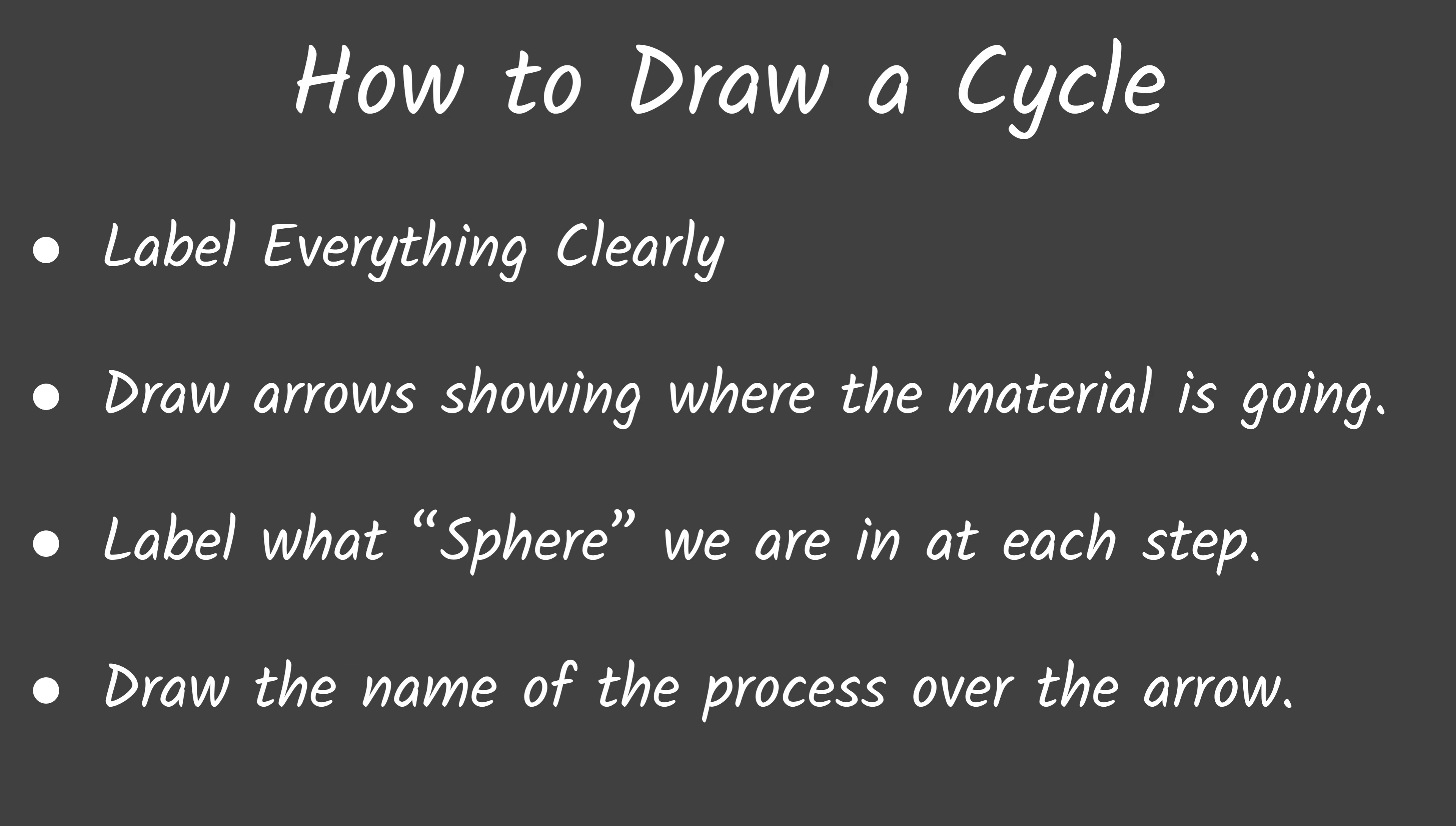When it comes to actually drawing a cycle, there's important steps that we need to do. First, you need to make sure everything is labeled clearly. That means it's clear where the label belongs, and it's written legibly so I can read it. You need to have arrows showing the direction that the material or energy is going. So if I'm drawing the carbon cycle and an animal is consuming a carbon source, I need to show that arrow going towards the animal. The carbon is going into the animal.